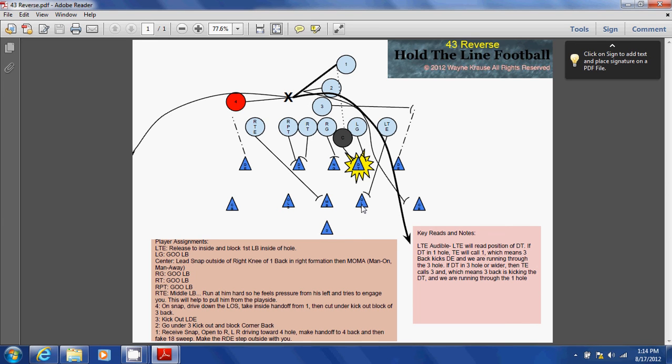For this play, the one back will take two steps upon receiving the ball and then hand the ball off here to the four back coming underneath him. Then the one back will continue on around the corner faking like he has the ball and is running an 18 sweep.